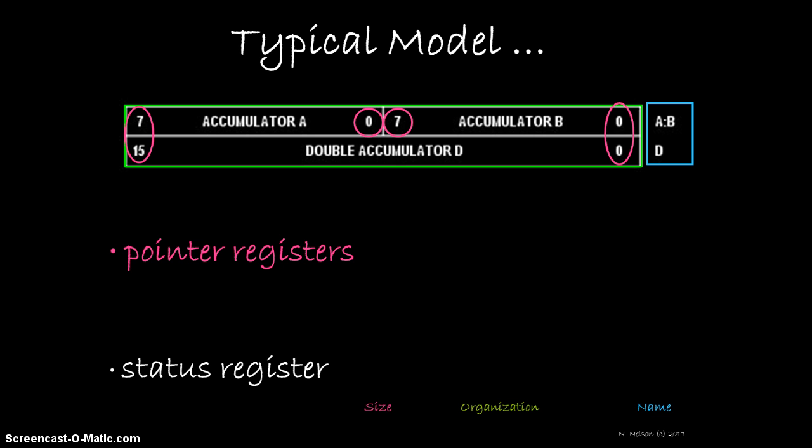Next, there's a set of pointer registers. These registers are always the same size as the processor's address bus. That means they can point to any address within the system's memory map.